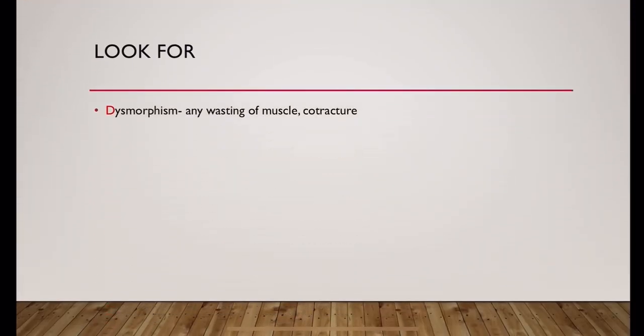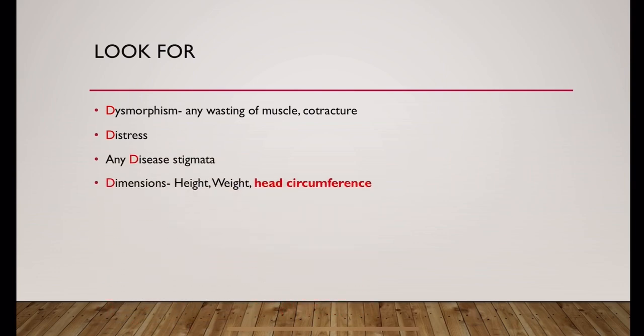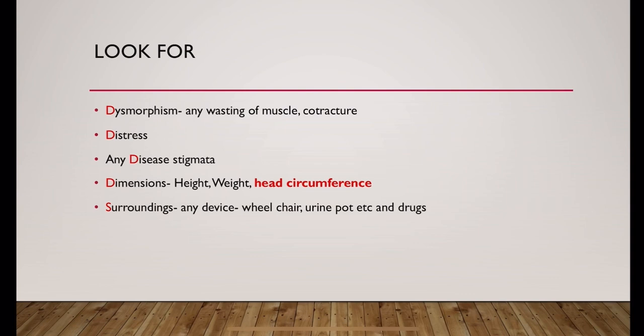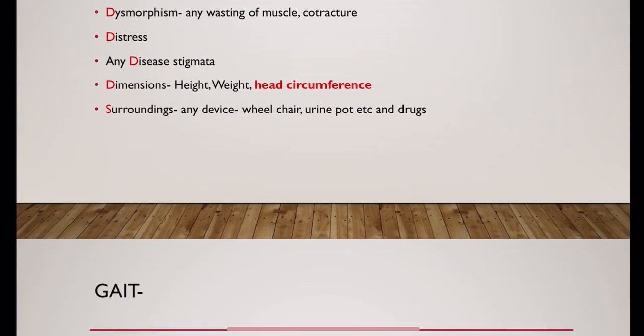Look for any dysmorphism, wasting of muscle, or contracture. Look for any distress, any dysmorphic stigmata. Measure height, weight, and more importantly head circumference. Look at the surroundings for any wheelchair, urine pot, or drugs like baclofen and clonidine, which are used as muscle relaxants.